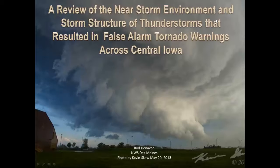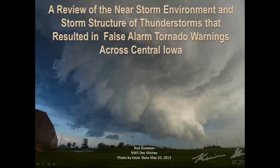Okay, thanks, John. So, welcome, everybody. It's kind of ironic because we're dealing with landspouts across the area currently, which tends to be the case for Iowa. We tend to get a lot of atypical type stuff as opposed to the big supercells to our west and southwest. The current image on the screen is actually a supercell that developed over Des Moines on May 20th. It resulted in a false alarm, and we'll review that case shortly.